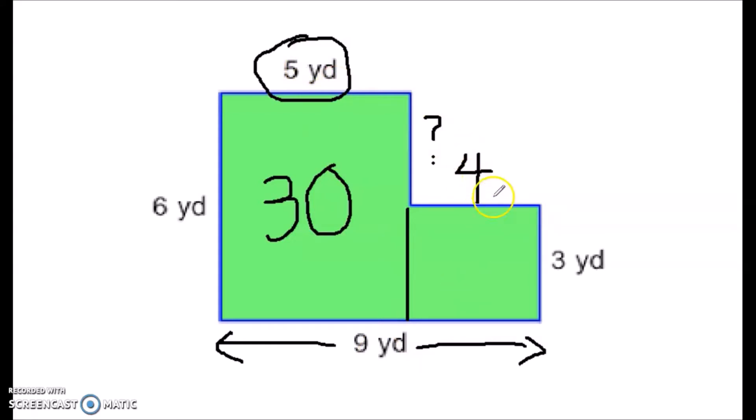So now I can figure out, okay, so if that's four and this is three, this shape must have now the area of 30 plus 12, this whole thing has an area of 42.